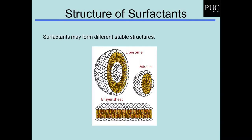Aqui está a principal estrutura formada por surfactante, que é uma micela. A cabeça polar do surfactante está na parte verde, e a parte hidrofóbica — as cadeias hidrocarbônicas — são as partes amarelas. A parte amarela está para dentro e a parte polar está para fora; logo, essa micela está no meio aquoso. Se a gente tem no meio apolar, forma uma micela diferente, que é a micela reversa.